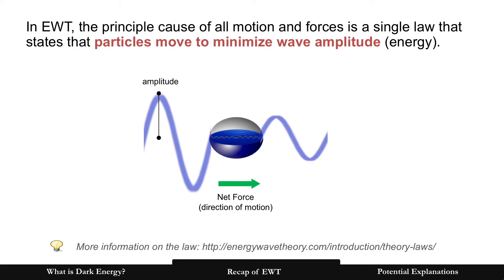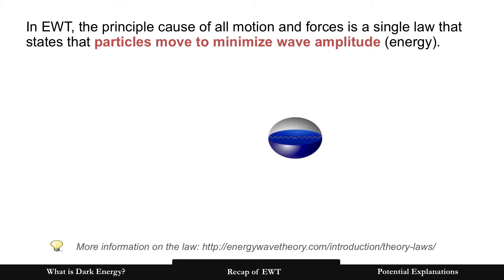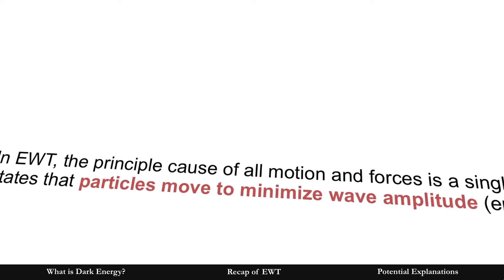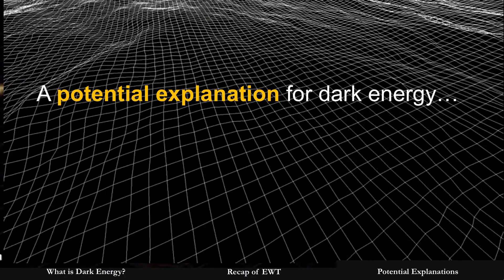Another important thing to note is the principal cause of all motion in EWT is a single law that states that particles move to minimize wave amplitude, which becomes energy. You can see an example there of wave energy or amplitude is higher on the left side of the particle than on the right, causing a net force in the direction until wave amplitude is minimized, in which case there is no longer a force.